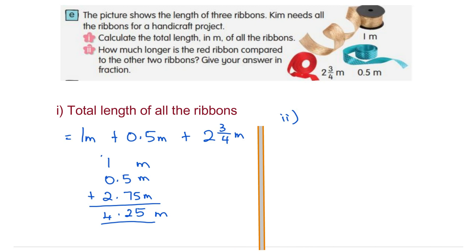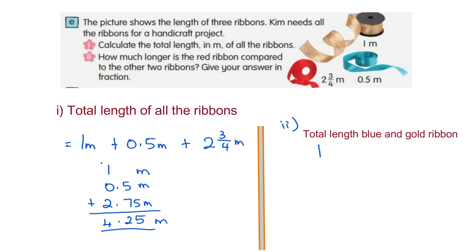So 1 meter plus 0.5 meters equals 1.5 meters. Now, how much longer compared? What you have to do is, the red ribbon is 2.75 meters minus 1.5.